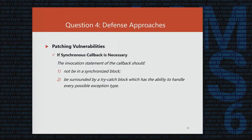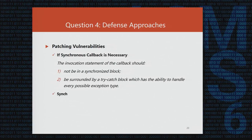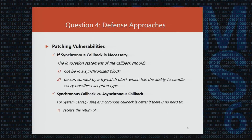The attacks exploiting these vulnerabilities are hard to prevent. The best defense approach is to detect and patch the vulnerabilities as soon as possible. For situations where a callback must be synchronous, the invocation statement of the callback should first not be in a synchronized block, and second be surrounded in a try-catch block with the ability to handle every possible exception type. For the system server, using an asynchronous callback is better if there is no need to receive the return value or wait for the callback to finish.